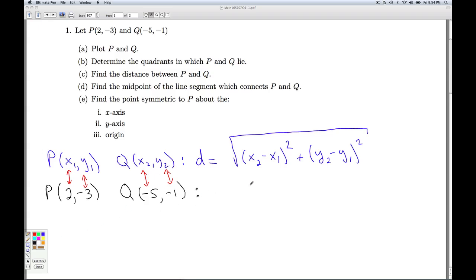So as we say, we plug and chug. X2 minus X1, negative 5 minus 2, square that. Y2 minus Y1, negative 1 minus negative 3, square that, add them together, and take the square root.